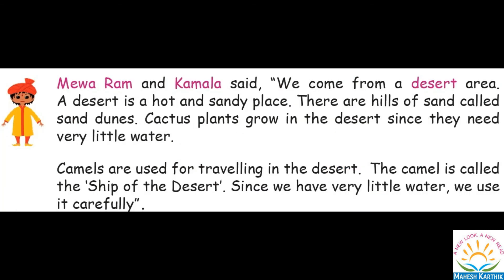Now Mewaram and Kamala said that they were coming from a desert. We come from a desert area. A desert is a hot and sandy place. There are hills of sand called sand dunes. Cactus plants grow in the desert since they need very little water. Camels are used for traveling in the desert — the camel is called the ship of the desert. Since we have very little water, we use it carefully.